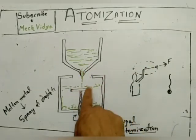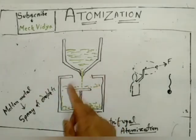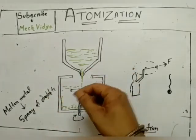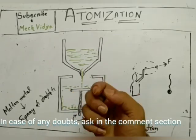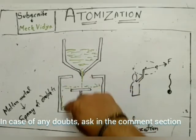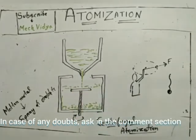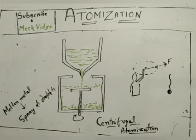Due to this action, this molten metal will get converted into small droplets and it will collect in the bottom of the collecting chamber. In this way we will get our metallic powders with the help of centrifugal atomization. So this was all about atomization.